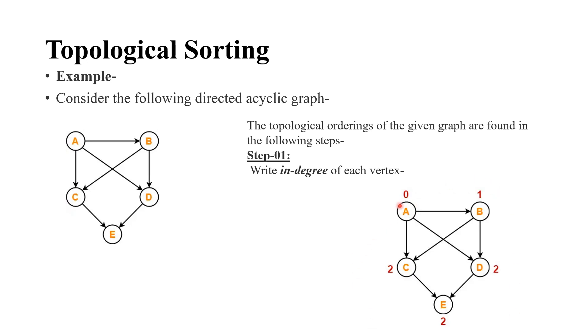For A, no incoming edges, so we have 0. For B, one incoming edge. For D, two incoming edges. For E and C also two incoming edges.